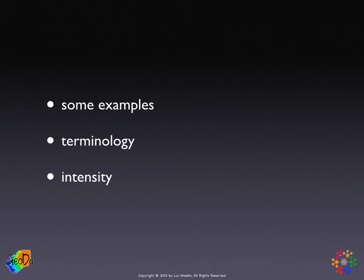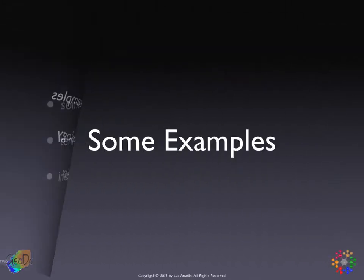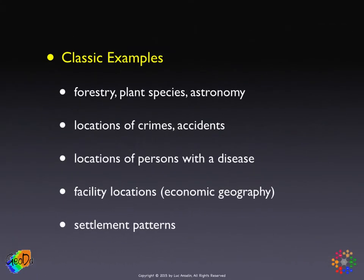We'll start by going over some examples. Classic examples in the literature come mostly out of forestry, plant ecology, astronomy, locations of rocks, and locations of digs in archaeology. In the social sciences, probably the most common application of point pattern analysis would be in criminology — looking for patterns in locations of crimes, locations of accidents, and the like.